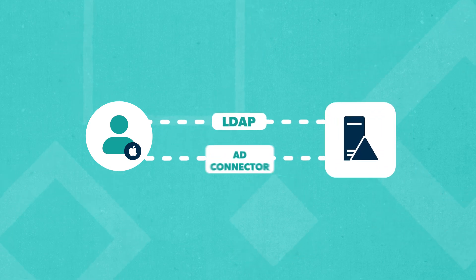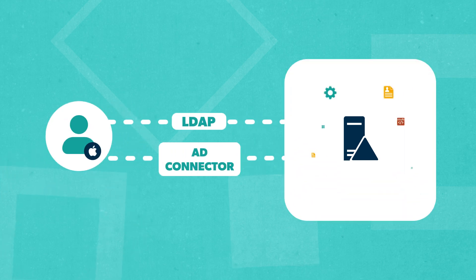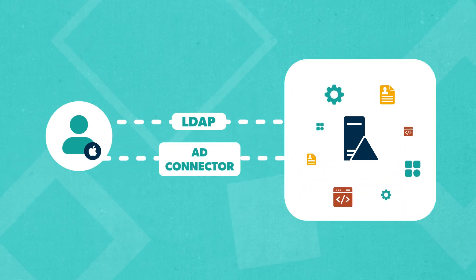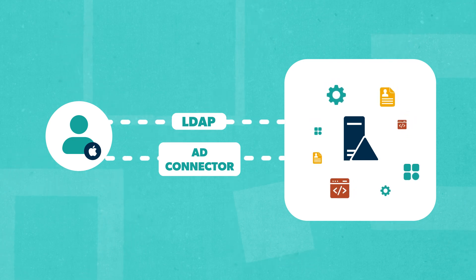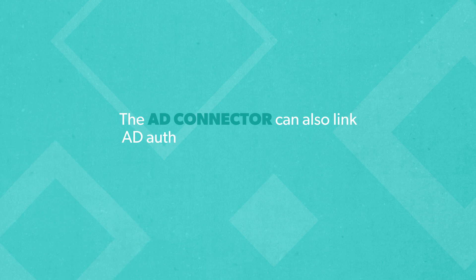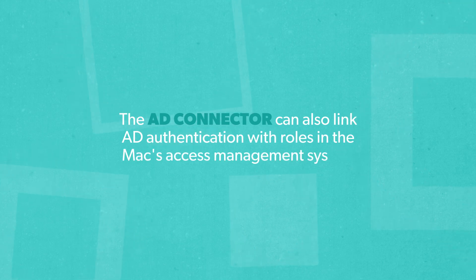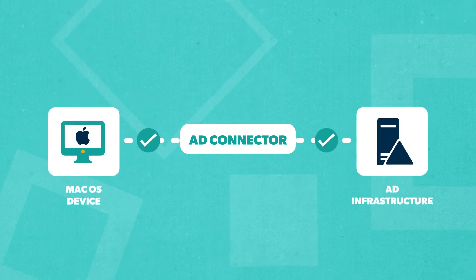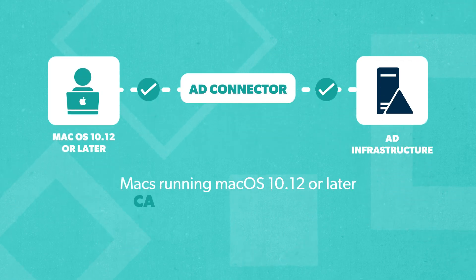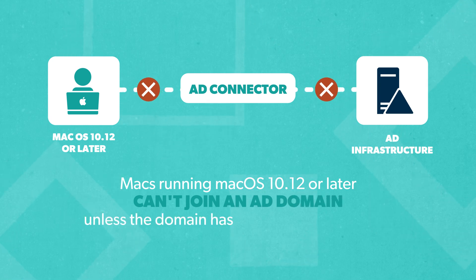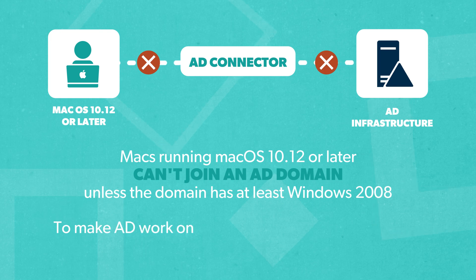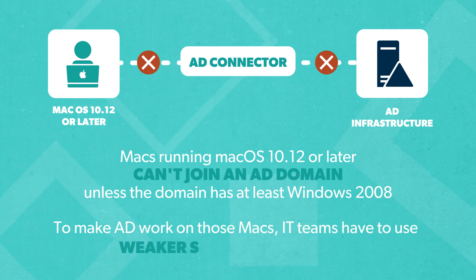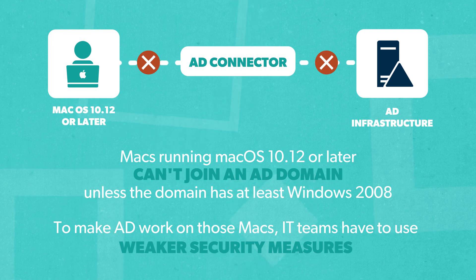For Mac devices, you can connect to Active Directory using an LDAP and AD connector. These tools help configure Macs so that users can access their basic account information from the AD infrastructure so they can get to company resources from their device. The AD connector can also link AD authentication with roles in the Mac's access management system. The AD connector takes care of all the things needed to prove that a macOS device is allowed to use the AD infrastructure. But here's the catch: Macs running macOS 10.12 or later can't join an AD domain unless the domain has at least Windows 2008. To make AD work on those Macs, IT teams have to use weaker security measures, which is risky for the organization's safety.